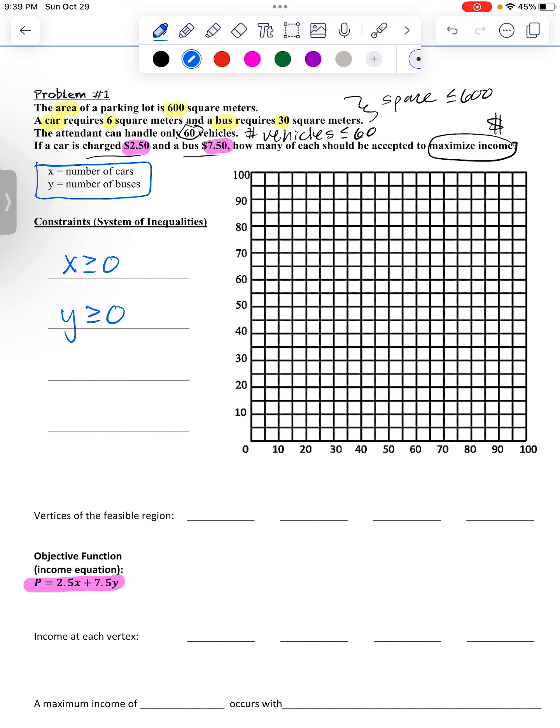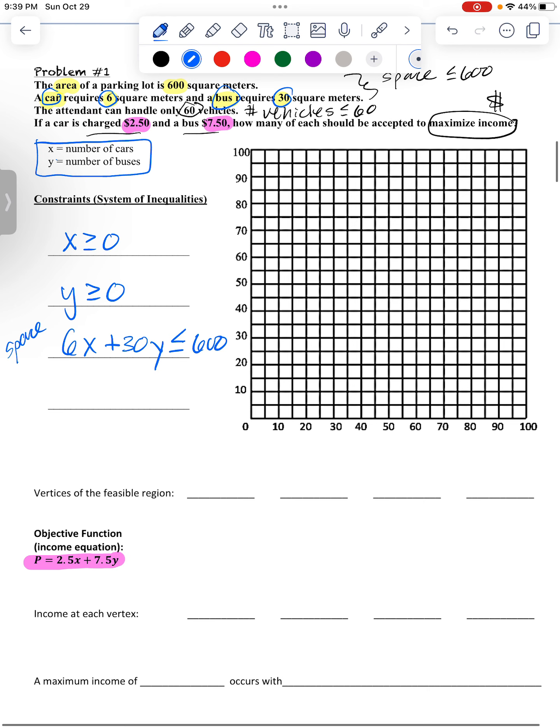Now, one of the things that's limited is our space. So let's write a space equation. So it says every car, which is our x, requires six square meters. So six per car, plus a bus requires 30. So 30, and then that's going to go with y because y is the number of buses. And that all has to stay less than or equal to 600 because that's as much space as we have. The other thing is it says they can only have 60 vehicles. So this is going to be the number of vehicles. So that's just straight up number of cars plus number of buses has to stay less than or equal to 60.